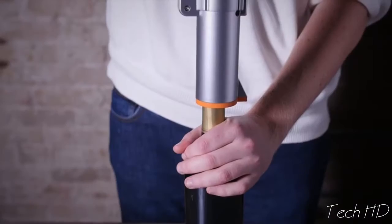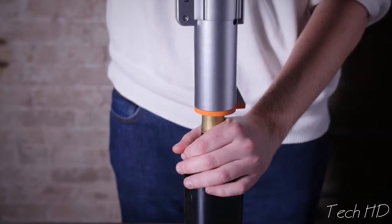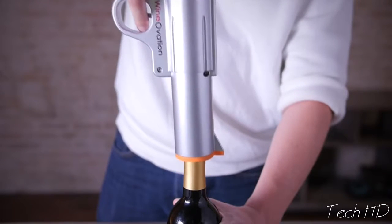Simply pull the trigger to remove the cork from the bottle. The wine opener will automatically stop once the cork is fully removed.